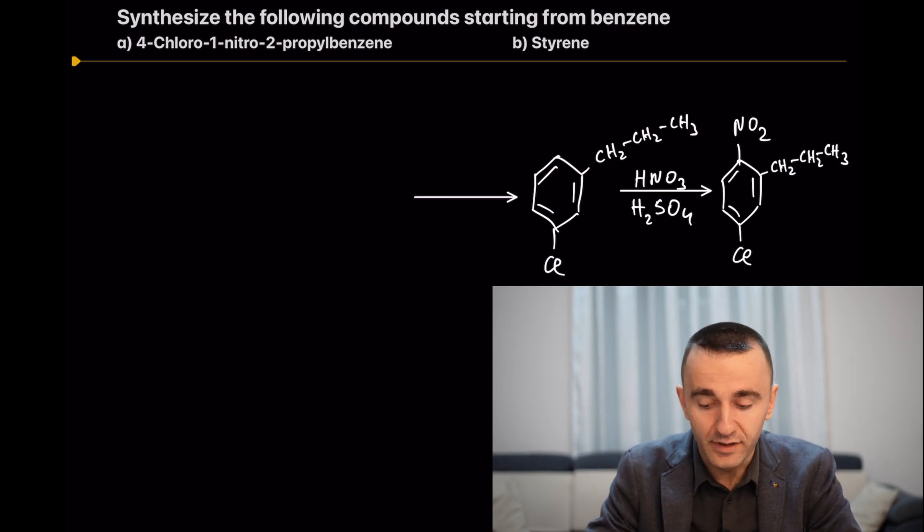What are we going to do now? We see those two groups are oriented with each other in meta position. Chlorine does not orient meta, even propyl does not orient meta. What is going on here? If you remember from my previous videos in the organic chemistry playlist, you cannot do this reaction straightforward with propyl because you have carbocation rearrangement.